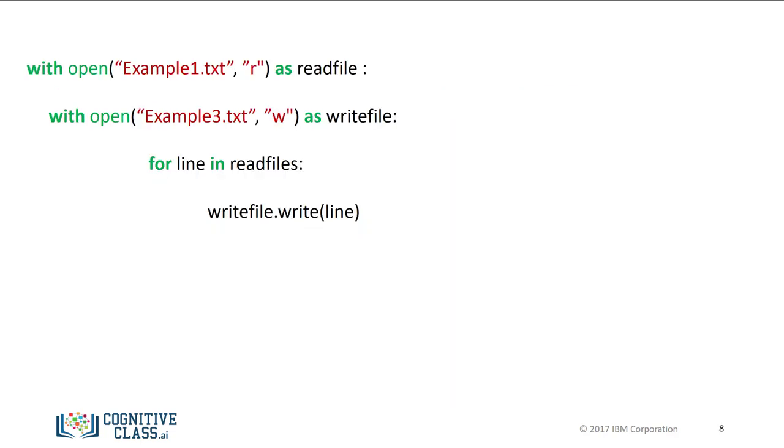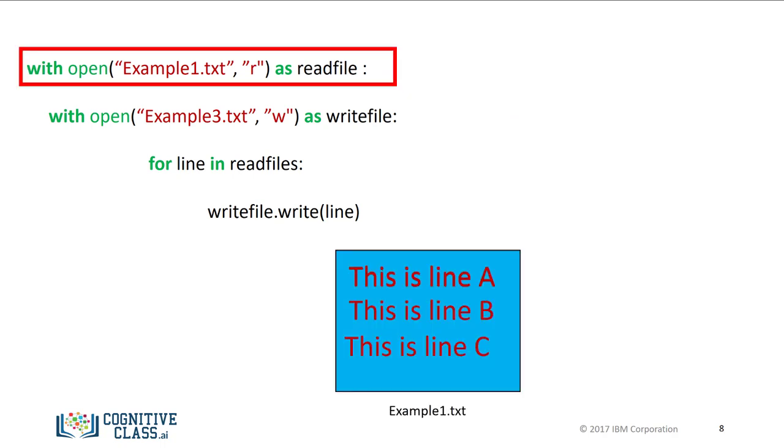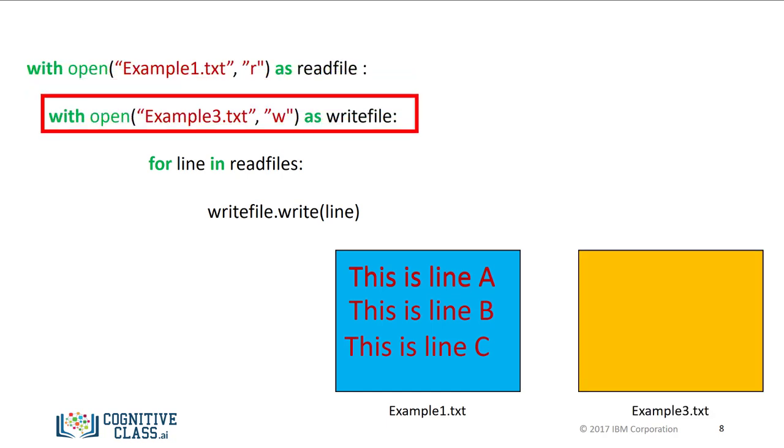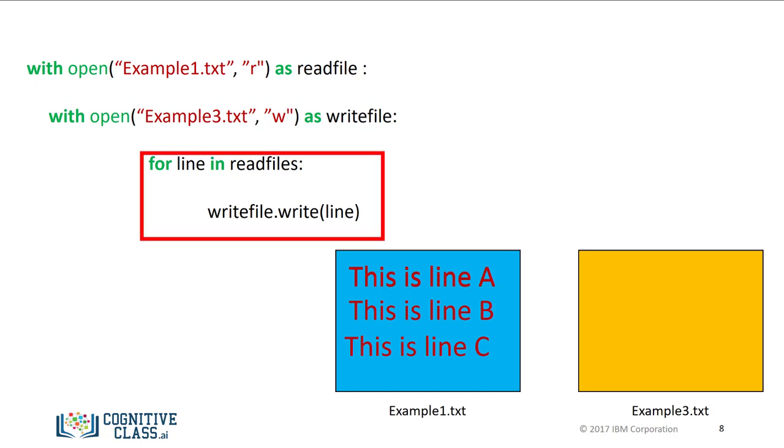We can copy one file to a new file as follows. First, we read the file example1 and interact with it via the file object readFile. Then we create a new file example3 and use the file object writeFile to interact with it. The for loop takes a line from the file object readFile and stores it in the file example3 using the file object writeFile.